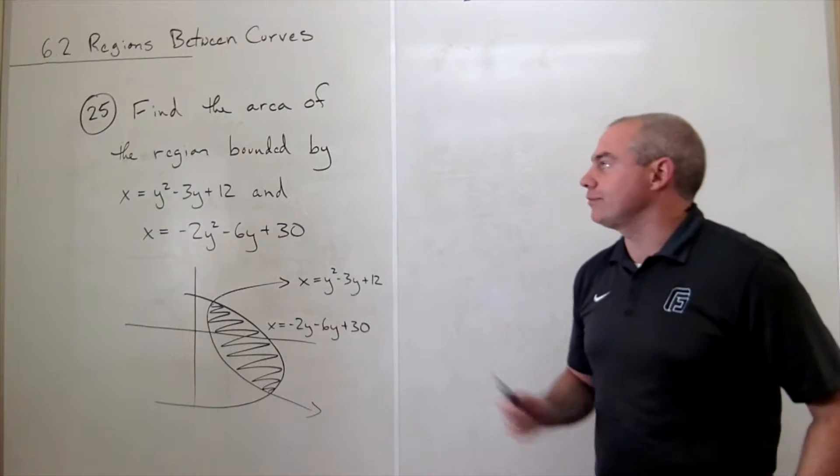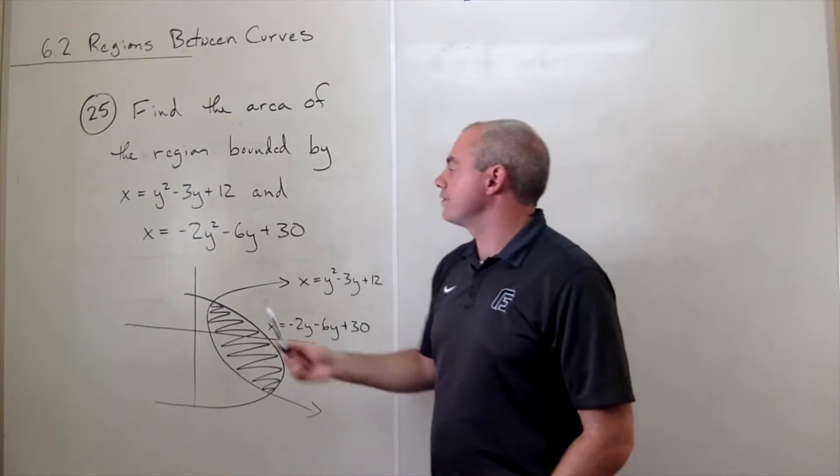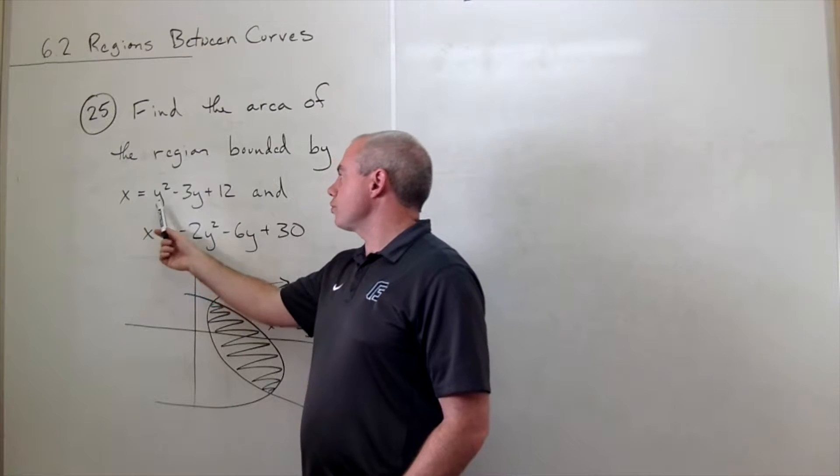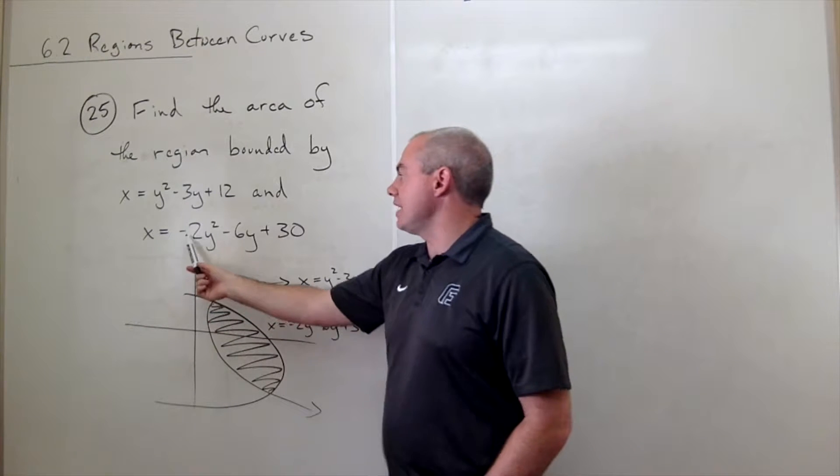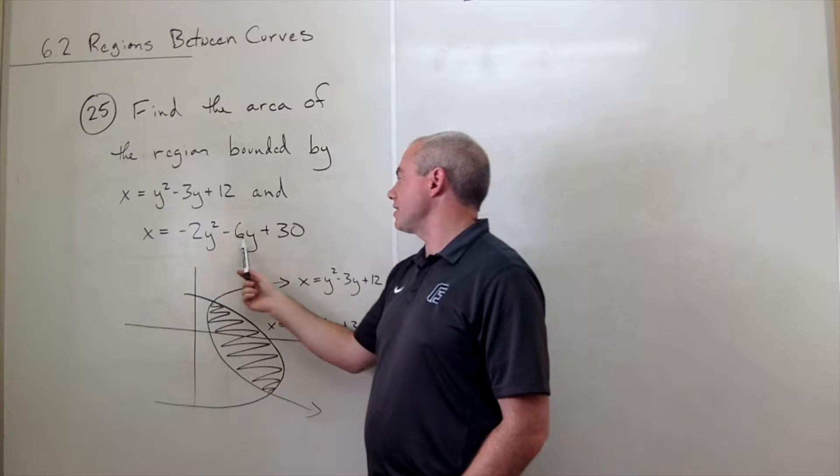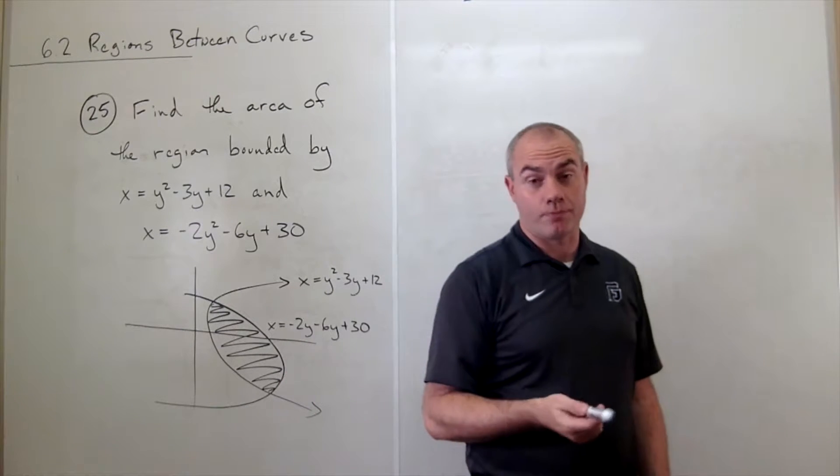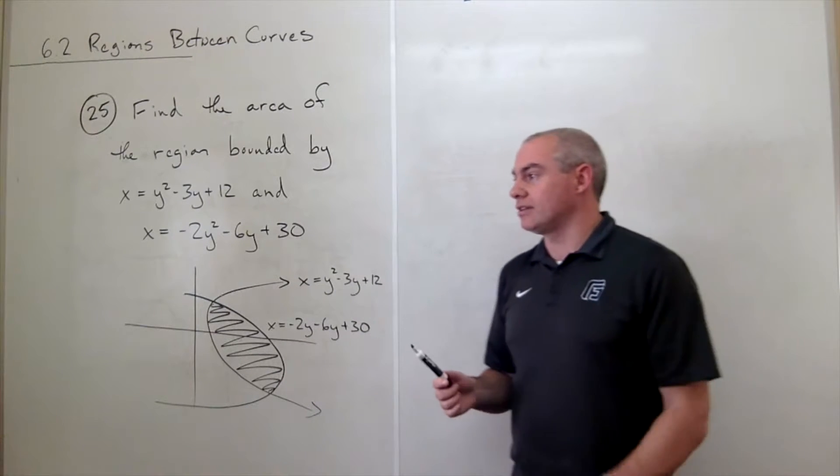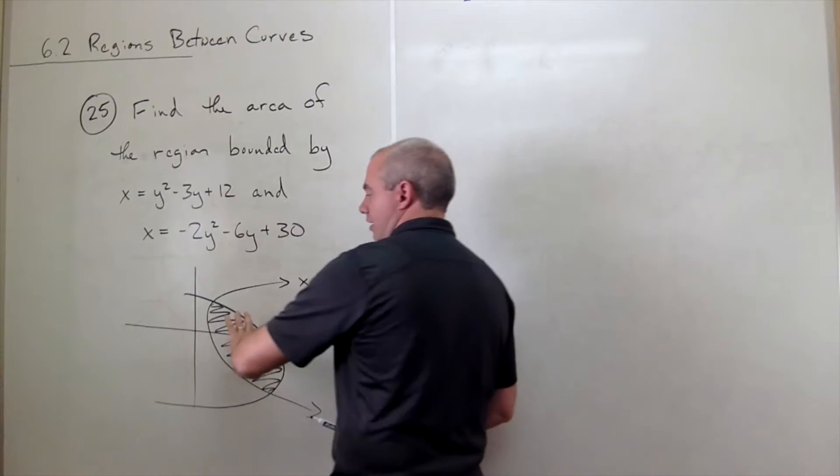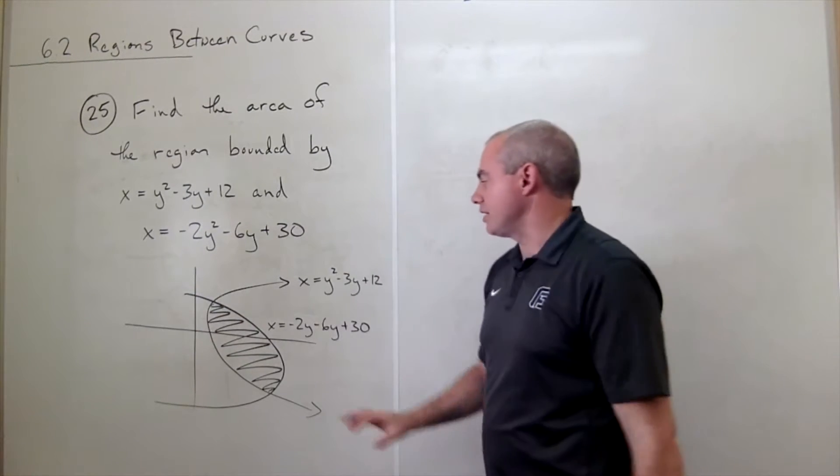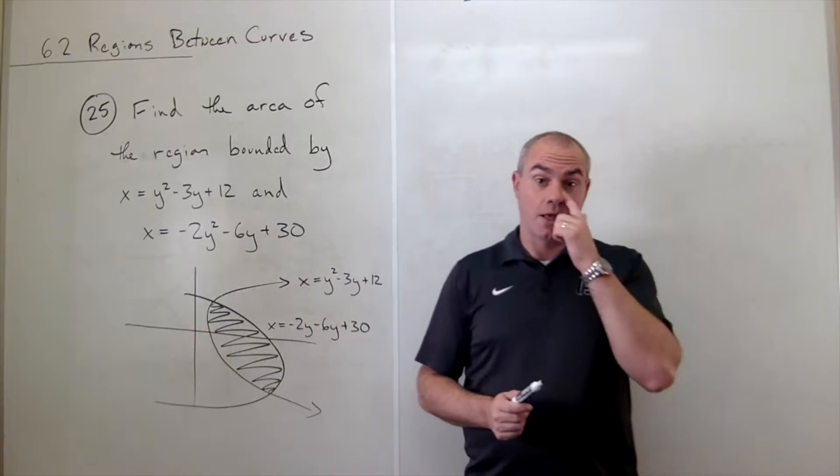In problem number 25, we'd like to find the area of the region bounded by two curves. One is x equals y squared minus 3y plus 12, and the other is x equals negative 2y squared minus 6y plus 30. As you can see, both of these are parabolas, and one of them is laying on its side pointing to the right, one's laying on its side pointing to the left, and so there's some area that's trapped between these two parabolas.